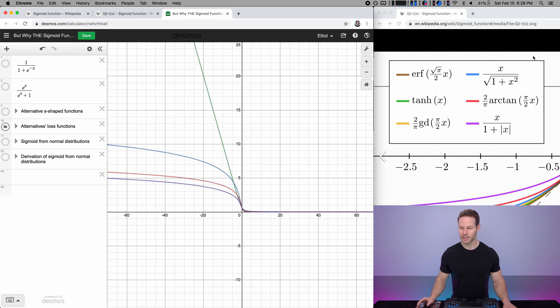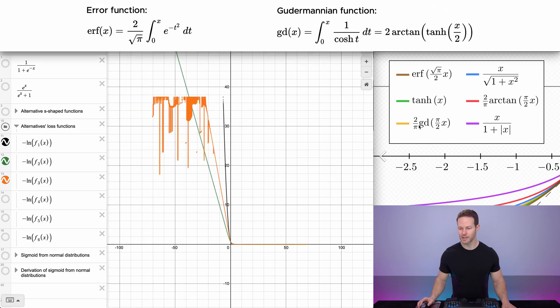So this saturation aspect of these functions on the right side are one of the main reasons why we don't use them.